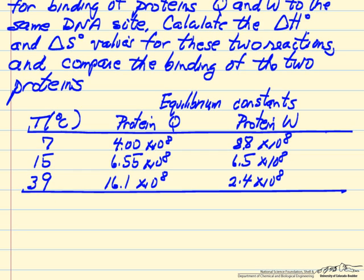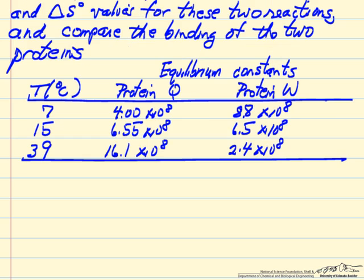A couple things to point out: very large equilibrium constants and a very narrow temperature range because of where we can operate with the proteins and not change them. We also notice that as we raise the temperature for protein Q, the equilibrium constant increases.